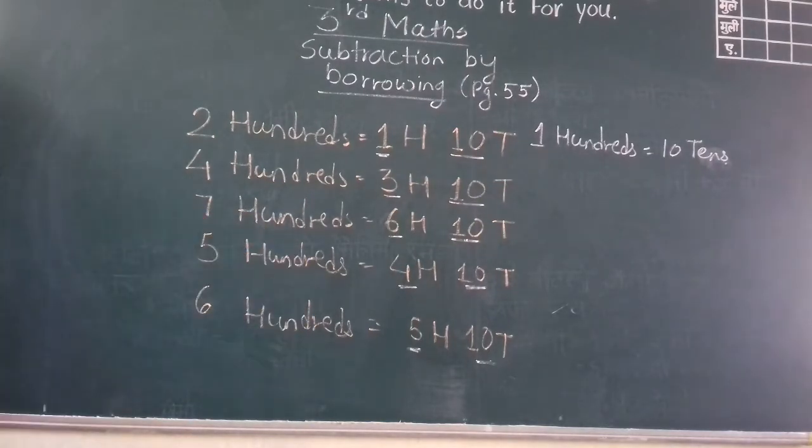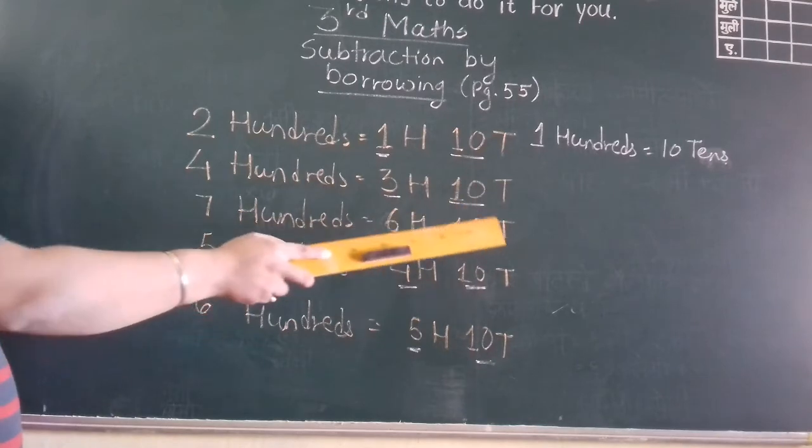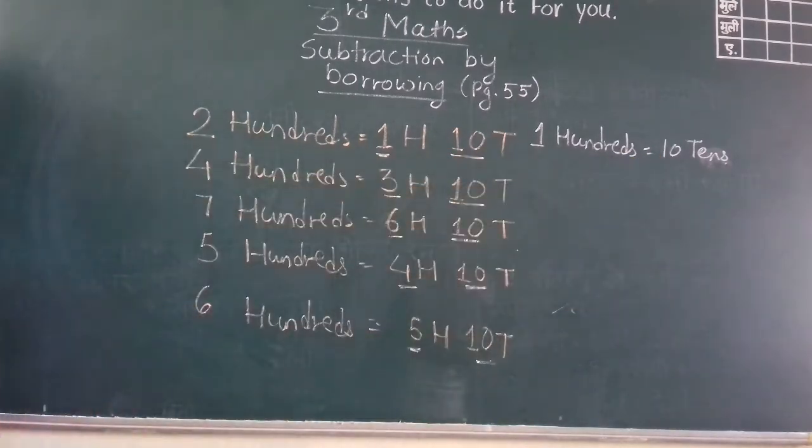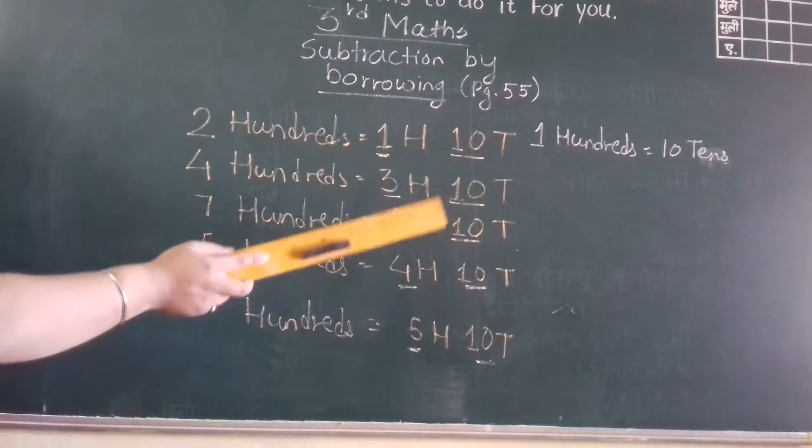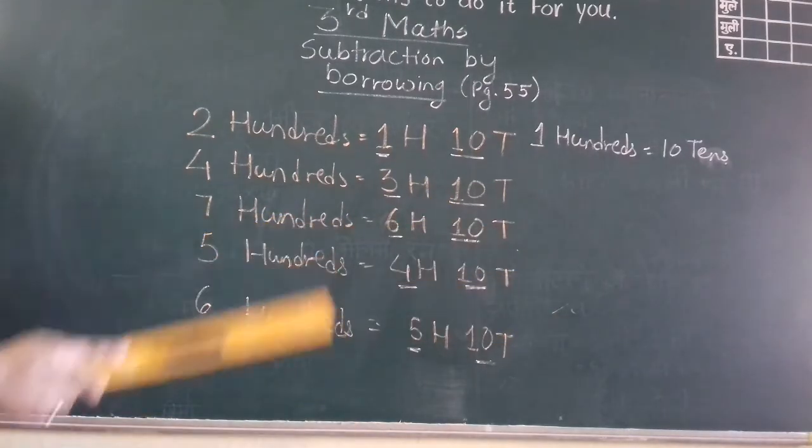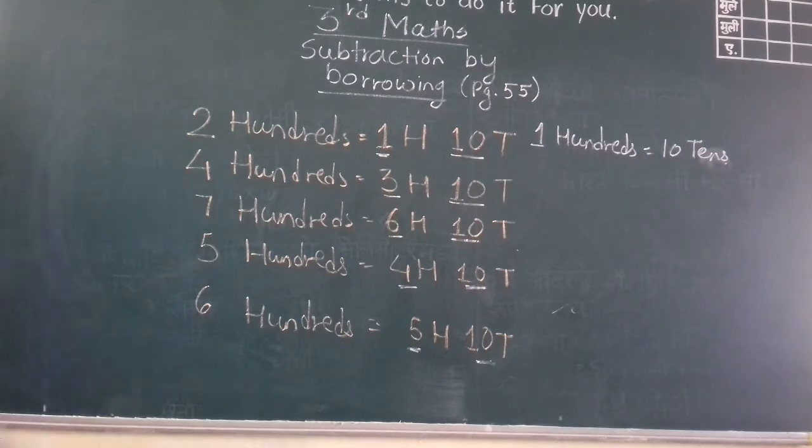Next. Seven hundreds means six hundred ten tens. Ten tens means one hundred. So seven hundred means this six hundred and this one hundred. That is seven hundreds.